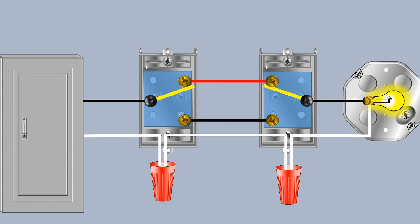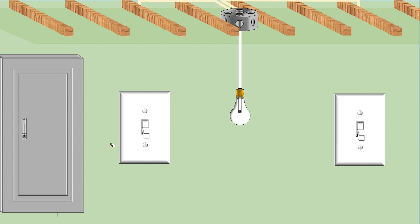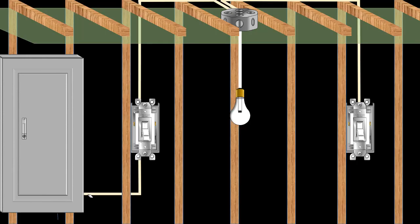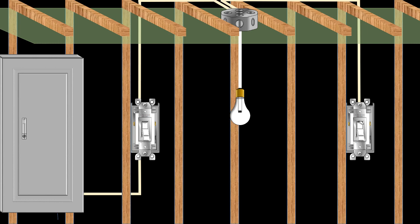The next thing I want to look at is an alternative wiring method you might encounter. It's the exact same scenario — two switches still control the same load, our light bulb. But if we pull the drywall off, this one's wired a little differently. Previously it went from the panel to the first switch box, then to the second switch box. This one's wired from the first switch box up to the light octagon box, and then from the octagon box down to the second switch. It'll still work the exact same way — flip one up, light comes on; flip the other up, light goes off.